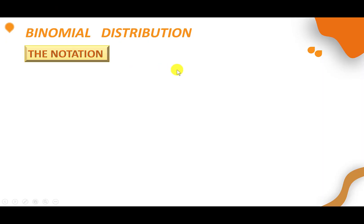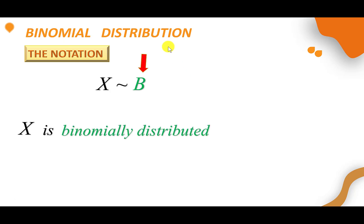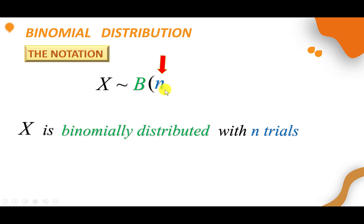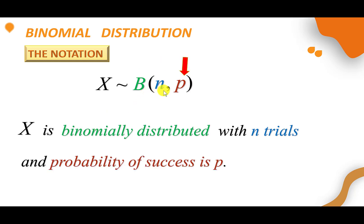Now we look at the notation of binomial distribution. X is binomially distributed — we use B, standing for binomial, with n trials and probability of success p. So we write X ~ B(n, p). This is how we write the notation.